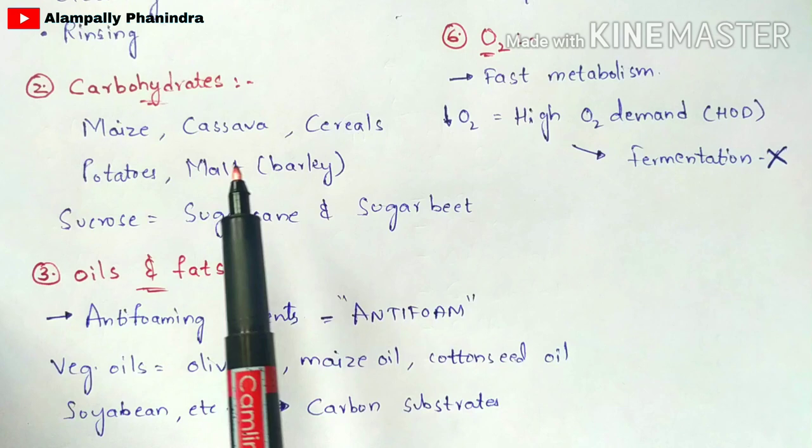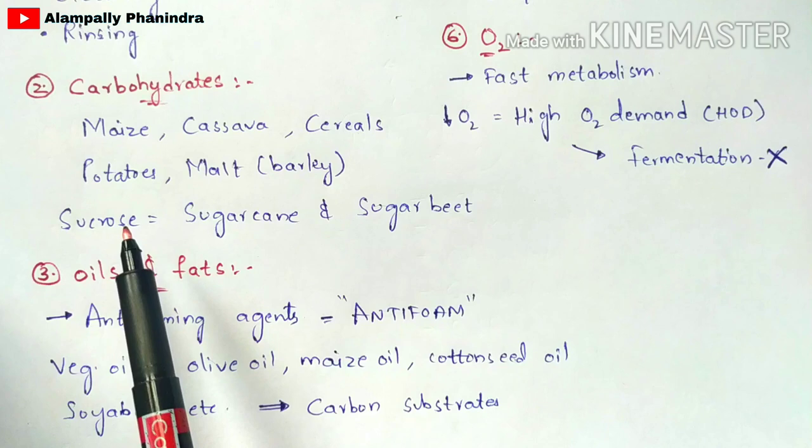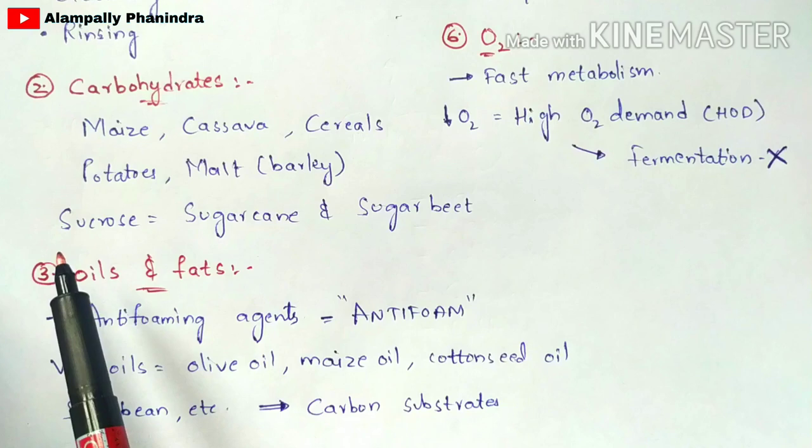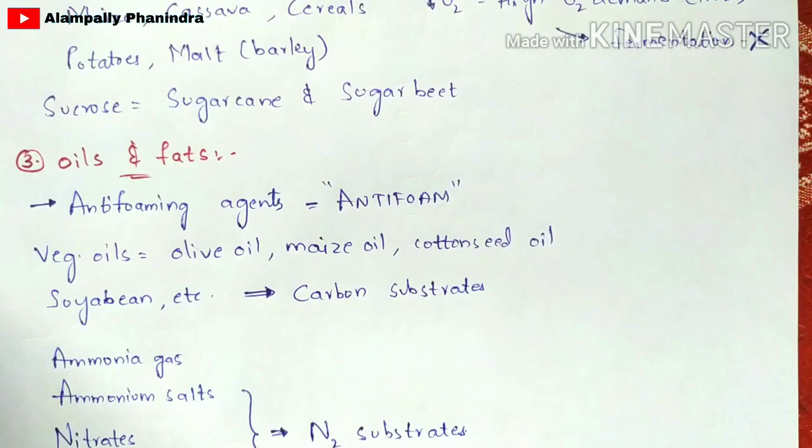The second component is carbohydrates. Carbohydrates include maize, cassava, cereals, potatoes, barley, and can also be taken as sucrose from sugarcane or sugar beet, in juice or powder form. These carbohydrates are essentially glucose — we take these nutrients in the form of glucose.